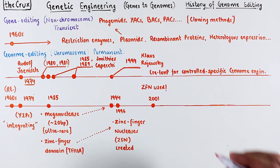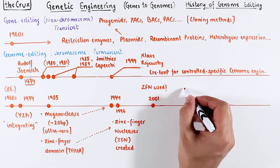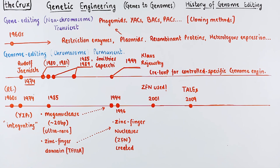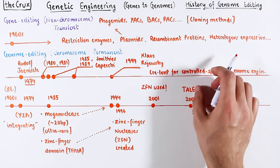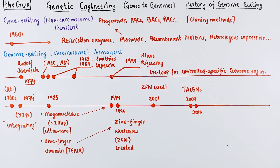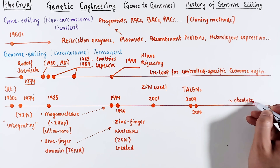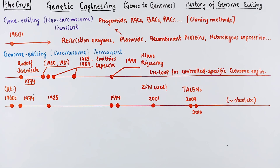And then in 2009, the specificity of TAL effectors was realized, and a year later, just like zinc fingers, nucleases were fused with TALs to get TALENs. Unfortunately, the usage of ZFNs and TALENs is largely obsolete for genome engineering in mammalian systems.